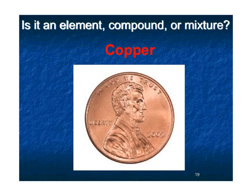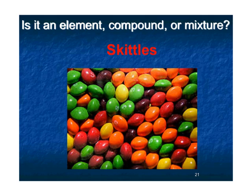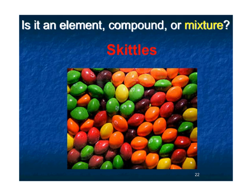Copper — element, compound, or mixture? Copper is an element. You can't break copper down any further and still have copper; it would just be electrons, protons, and neutrons. It's on the periodic table, so it's an element. What about skittles? Skittles are a mixture. I could take each one of these colors and physically separate them into different piles, but they are still skittles. I just physically separated them and they kept their same properties.